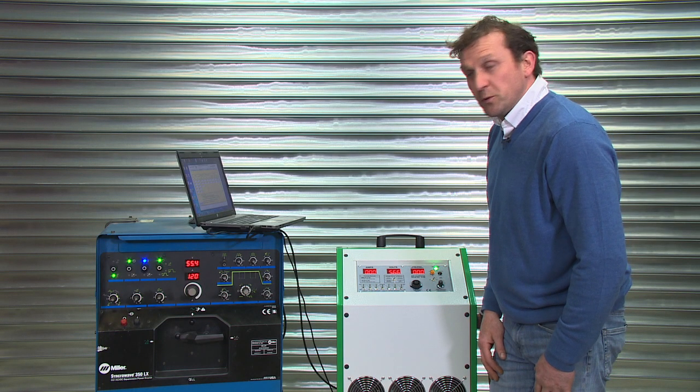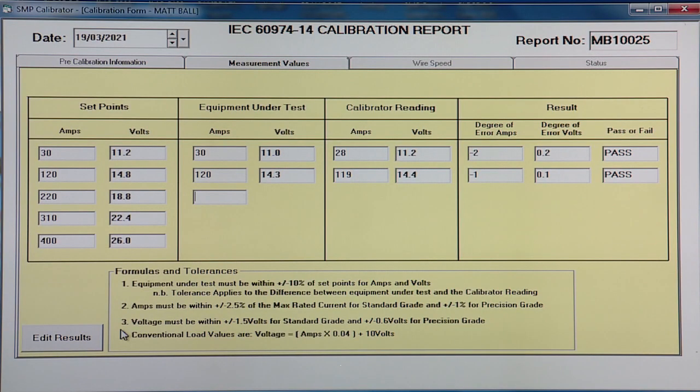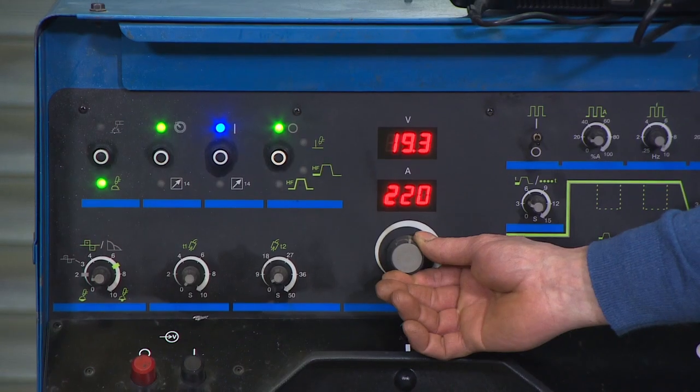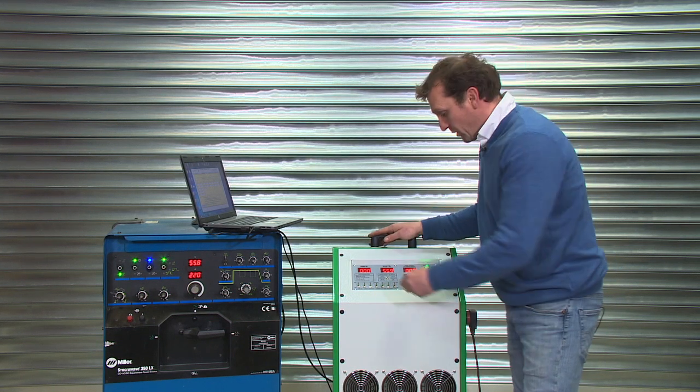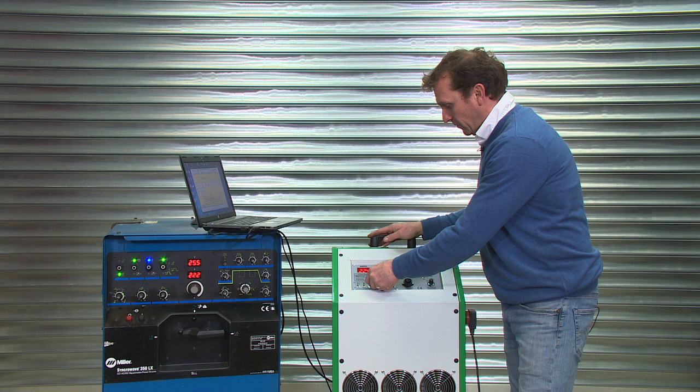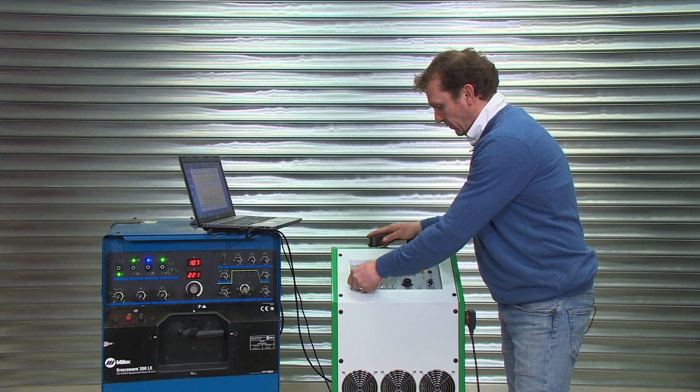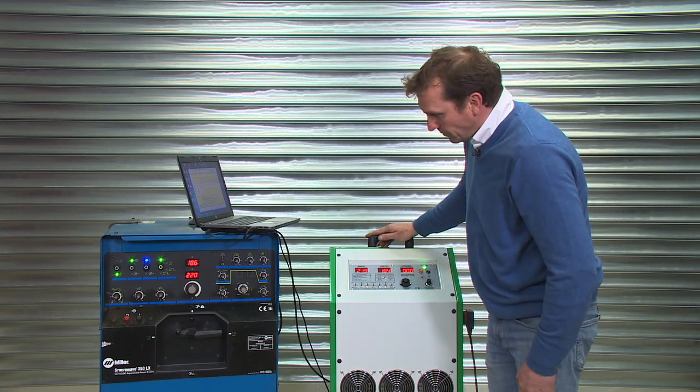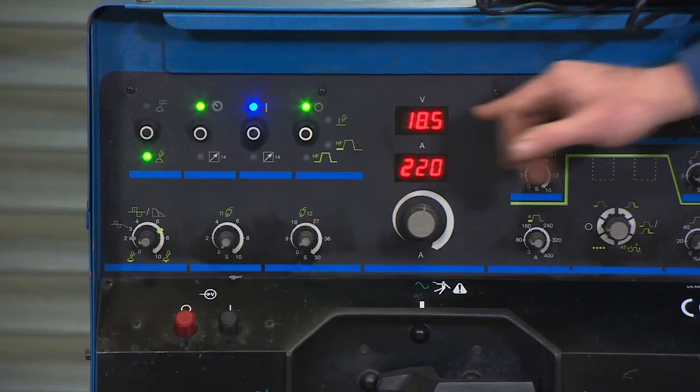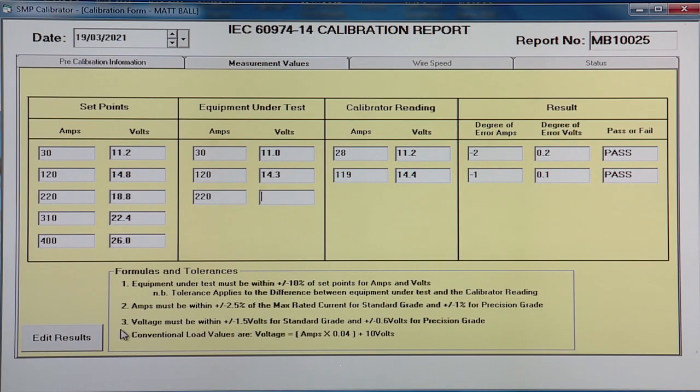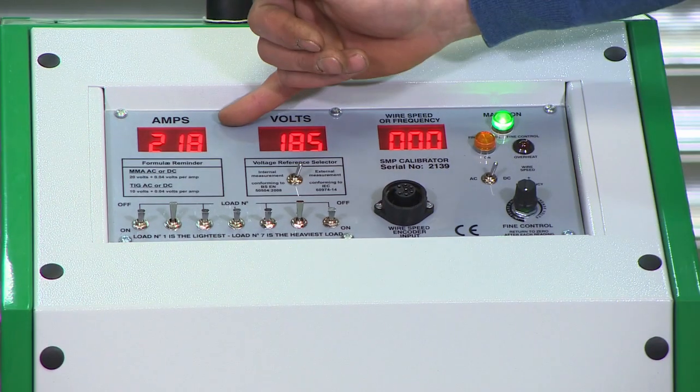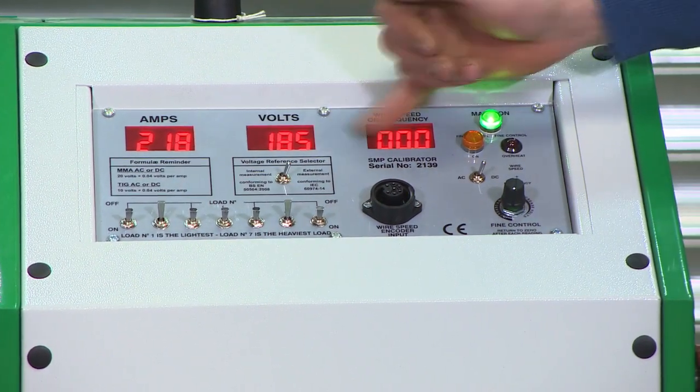Onto the next reading, 220 amps, 18.8. So we set the machine to 220. Then load up the calibrator to approximately 18.8 volts. We record 220, 18.5. Then the calibrator reading, 218, 18.5.